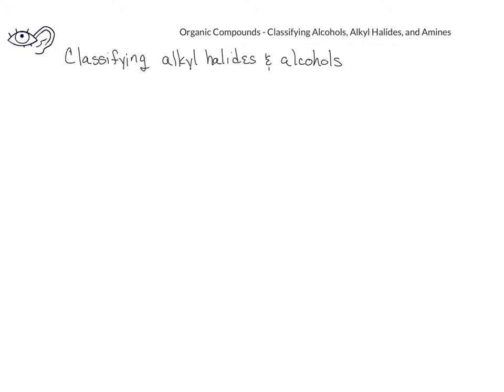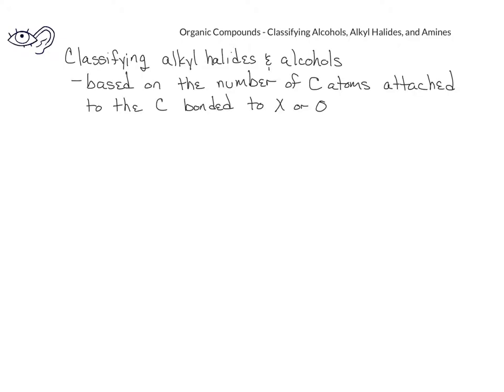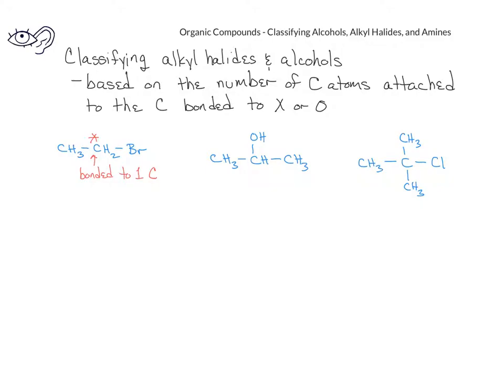Let's begin by looking at how to classify the alkyl halides and alcohols. When we look at alkyl halides and alcohols, we can classify them based on the carbon that is bonded to either the halogen or the oxygen atom. In this first example, we have a molecule that has two carbons and one of the carbons is bonded to a bromine atom. The carbon attached to the bromine will be indicated with an asterisk. This carbon with an asterisk is directly bonded to one other carbon. We'd call this kind of alkyl halide a primary alkyl halide because the carbon attached to the halogen atom is bonded to only one carbon.